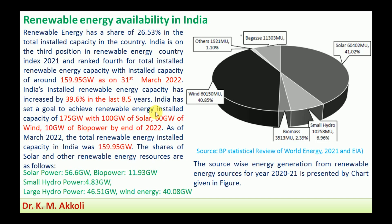India has set a goal to achieve a renewable energy installed capacity of 175 gigawatt — with 100 gigawatt of solar, 60 gigawatt of wind, and 10 gigawatt of bio power — by the end of 2022. Whether this goal has been reached will be discussed when that data becomes available.